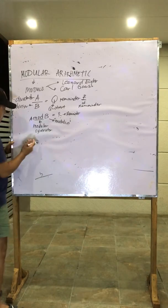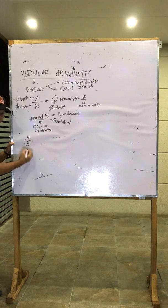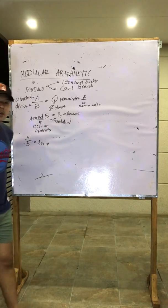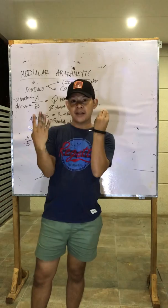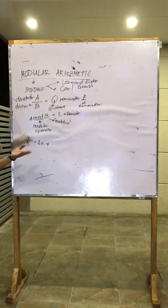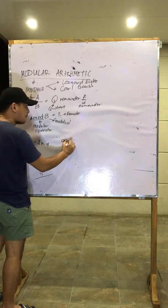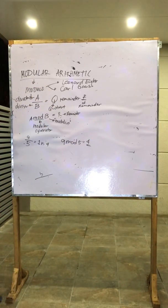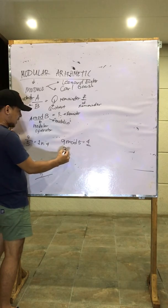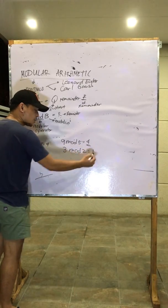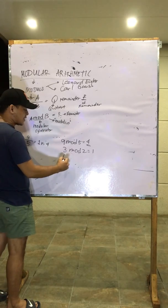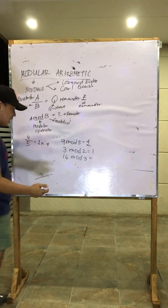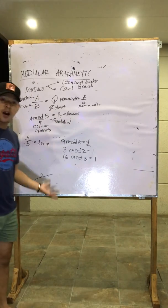To understand it, let us start with an example. We have 9 divided by 5, which gives quotient 1 remainder 4. So in modular arithmetic, 9 mod 5 is equal to the remainder, which is 4. Another example: 3 mod 2 is equal to 1 — we have remainder 1. For 16 mod 3: counting 3, 6, 9, 12, 15, the remainder is equal to 1. So this is modular arithmetic.